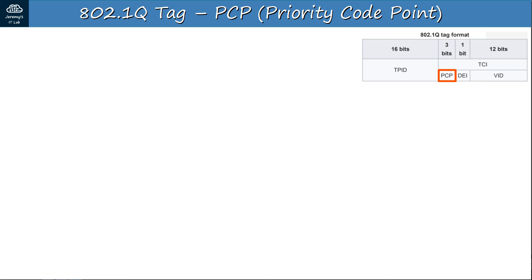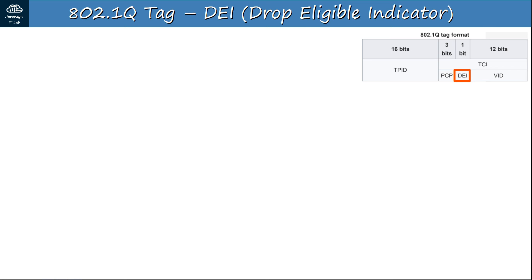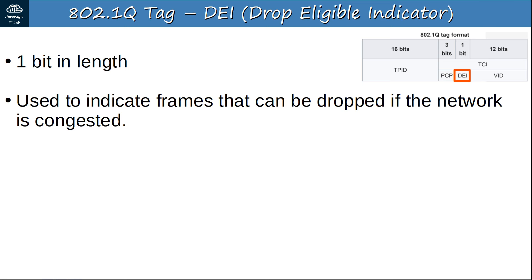The first field of the TCI is the PCP, or Priority Code Point. It is 3 bits in length and is used for Class of Service (COS), which prioritizes important traffic in congested networks. Just know the name and that it is used for COS. Next is the DEI, or Drop Eligible Indicator — a single bit used to indicate frames that can be dropped if the network is congested, ensuring more important traffic gets through. Just know the name and basic purpose for your CCNA.